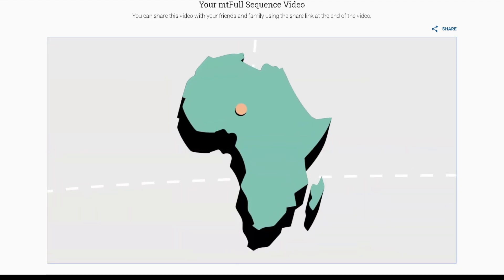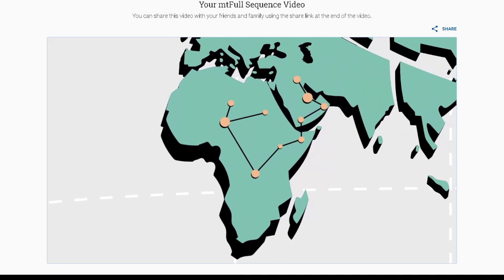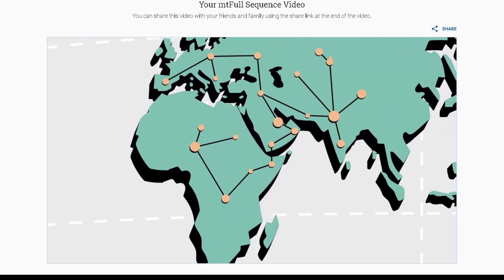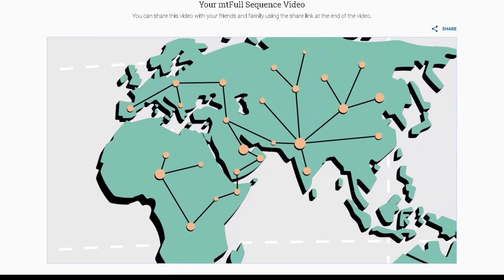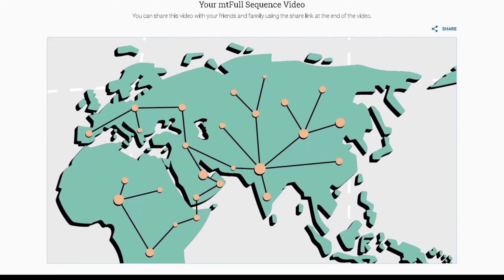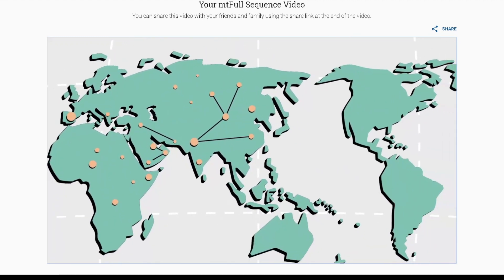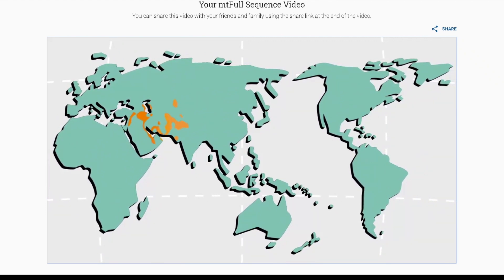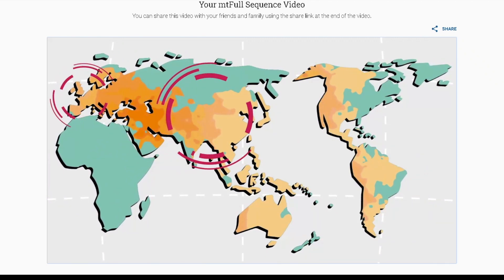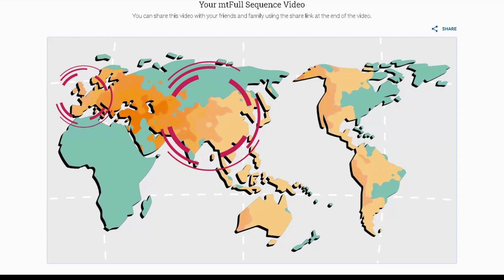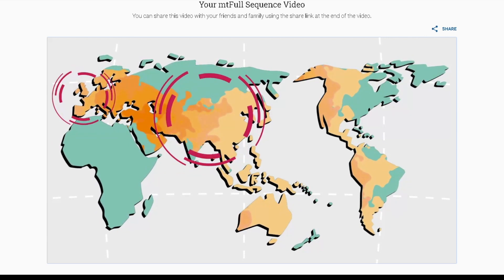Following the out of Africa exodus, a major migration moved through the coastlines of Arabia and then to the rest of Eurasia. Today, haplogroup R and its sub-branches are by far the dominant haplogroups found in Western Europe and Asia.